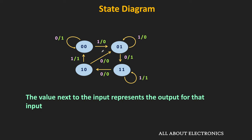The value next to the input represents the output of the circuit corresponding to the specific input. For example, if the circuit is in a 00 state and if we apply 1 as an input, then the output of the circuit will become 0 and it will go into the 01 state. That is how this state diagram represents the behavior of the finite state machine for any sequential circuit in a pictorial way. From the state diagram we can get to know the number of inputs and outputs as well as the number of states of the finite state machine, and it also shows how the change in the input leads to the state transition and the change in the output.